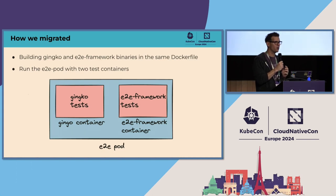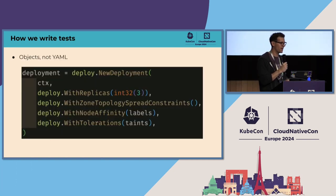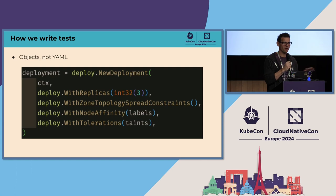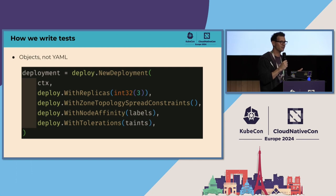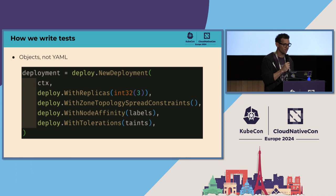During the migration, we also asked ourselves if there was anything we wanted to change about how we structure our end-to-end tests. First, we now write Kubernetes objects instead of YAML. I know we are all YAML engineers and we love YAML. But when you have 50 YAML files for all your tests, it's very difficult to make a change — for example ensuring label consistency for cost tracking or compliance, or bumping a base container version. Now we have a shared library with a single place to make that change, and users just import that library instead of copy-pasting YAMLs.